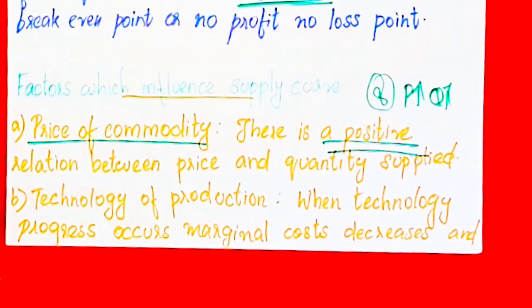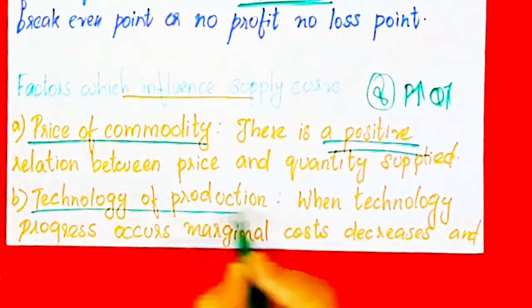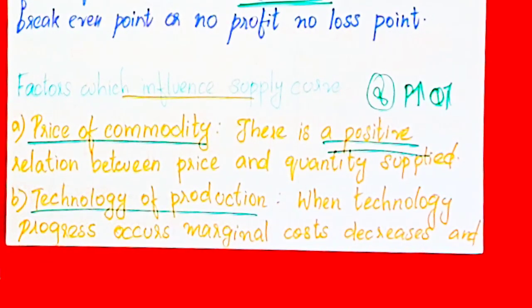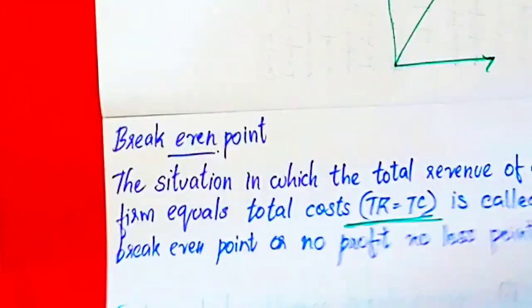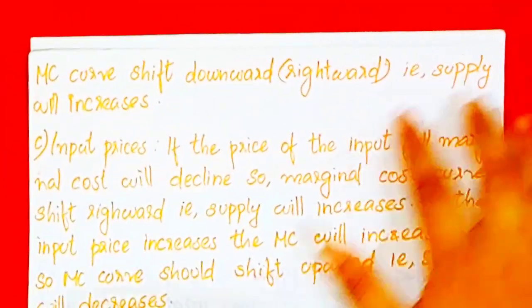The second factor is technology of production. With technological progress, marginal cost decreases and the MC curve shifts downward.